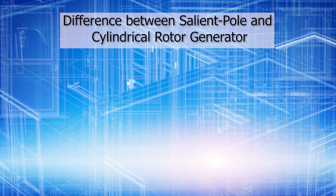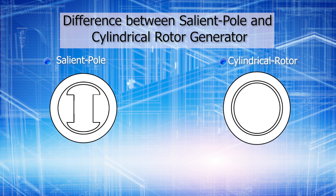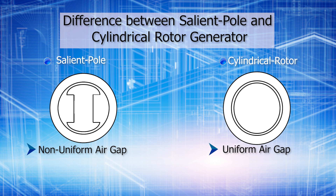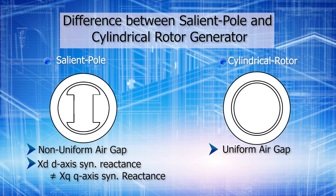A quick comparison between salient pole and cylindrical rotor: in salient pole type machines we have a non-uniform air gap, whereas in cylindrical rotor the air gap is uniform. XD is the d-axis synchronous reactance and XQ is the q-axis synchronous reactance. In salient pole, XD ≠ XQ, whereas in cylindrical rotor, since we have uniform air gap, XD = XQ = synchronous reactance Xs.